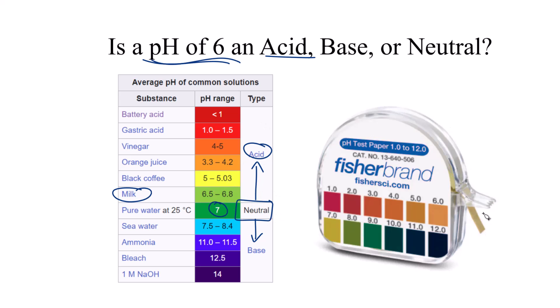If you took a piece of pH paper, tore a little piece off, and put it in the solution, you should see kind of this orangish color right here. That would tell you you have a pH of 6.